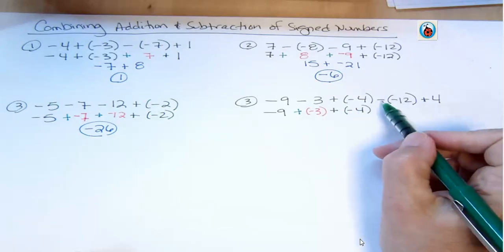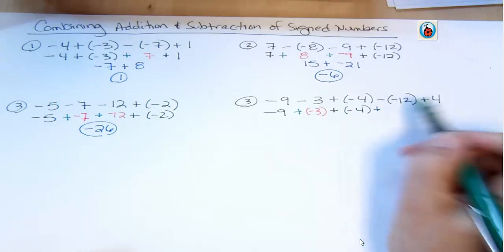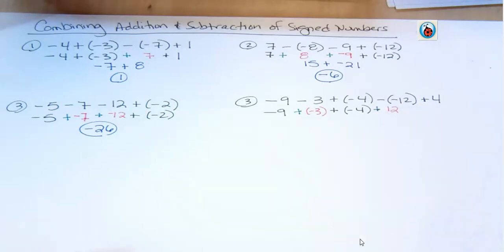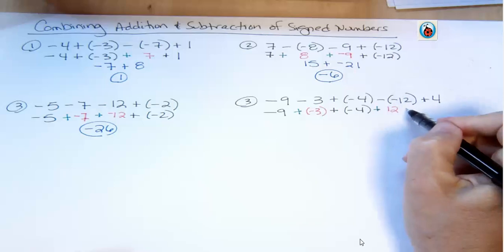This one, though, is a subtraction. I change it. I have to then change the following term. Negative 12 becomes positive 12. And I leave this the same because it's an addition.